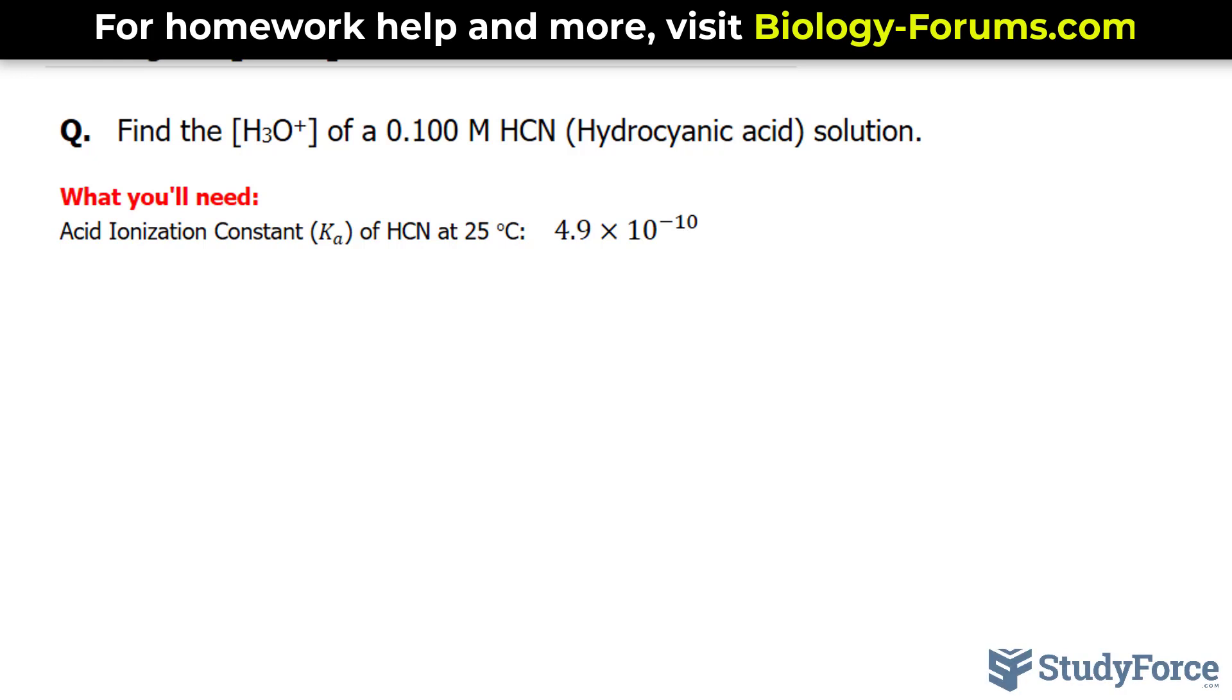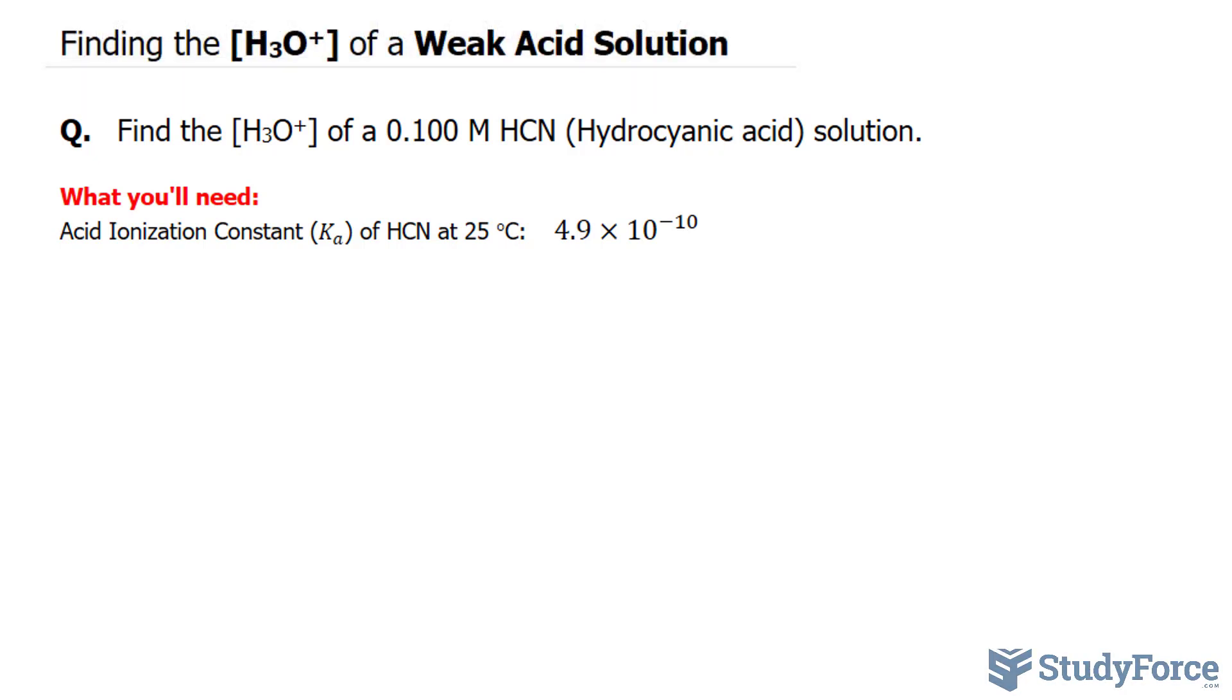The first thing that we want to do is write a balanced chemical equation where HCN is combined with liquid water and it forms hydronium and the conjugate base CN minus.